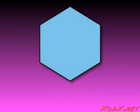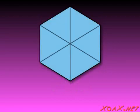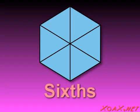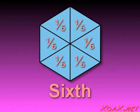We can take a hexagon and divide it into six smaller triangular pieces, which are equal to each other. Since there are six triangular regions, we call these regions sixths. Each of these triangles is one-sixth the area of the original hexagon.